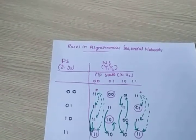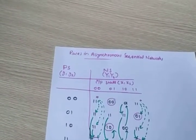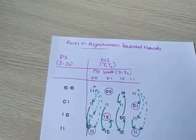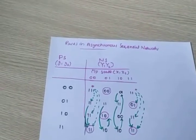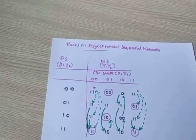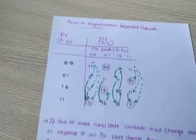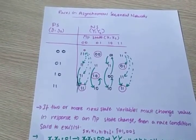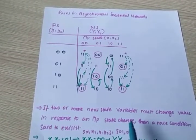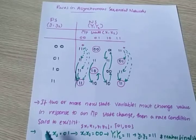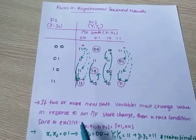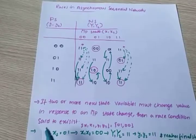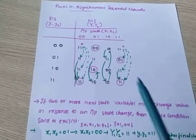Today I will discuss about races in asynchronous sequential networks. A race condition exists when two or more state variables must change value in response to an input state change.